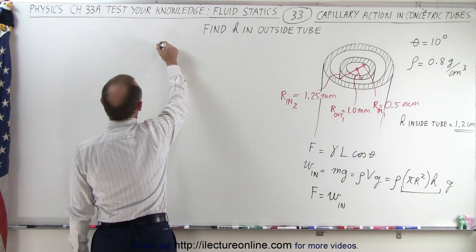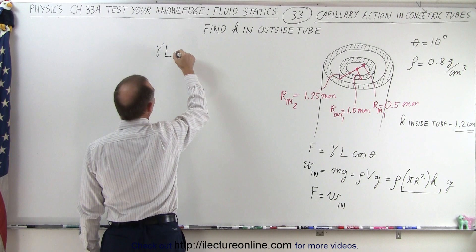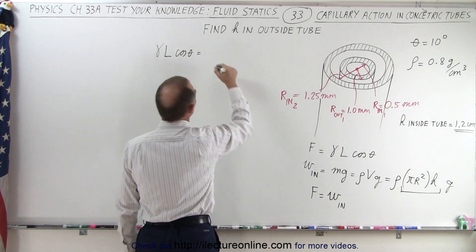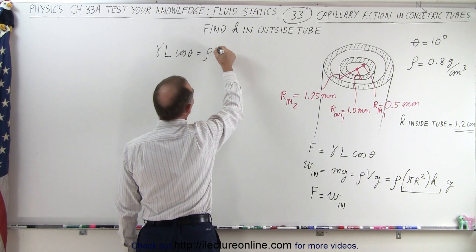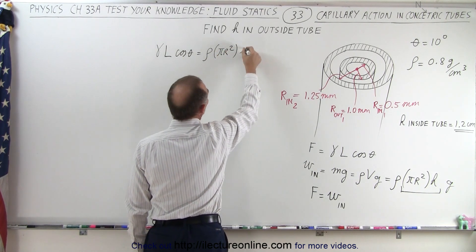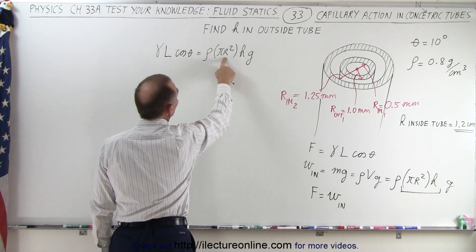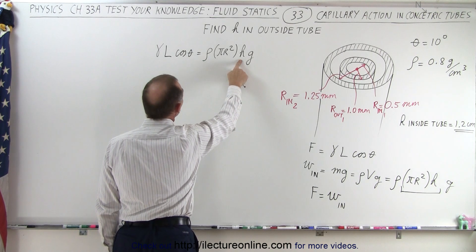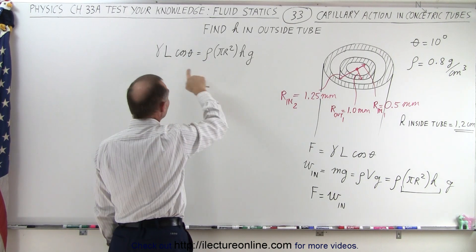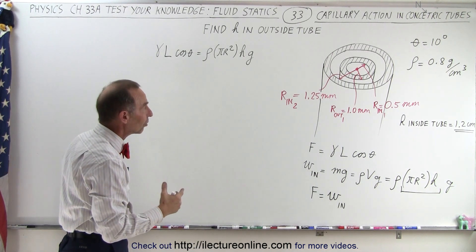Setting those two equal, we find: surface tension times the length of contact times cosine of theta equals density times pi r squared times h times g. Notice we know the radius, density, height, g, and the angle. The length of contact we can figure out. What we don't know is the surface tension constant.